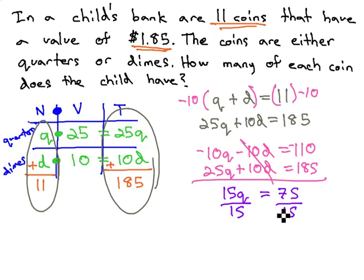Divide both sides by 15, and we now know the number of quarters in the bank. The number of quarters is 5.